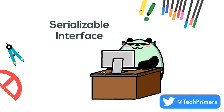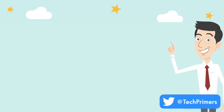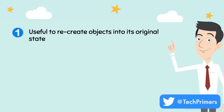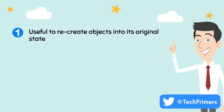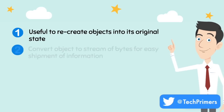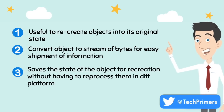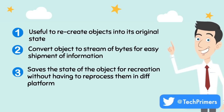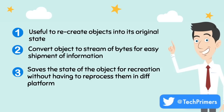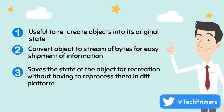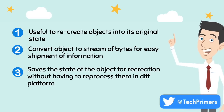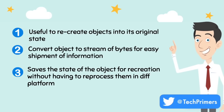To recap: serialization is useful for recreating objects into their original state, because you need to recreate these objects with their original value into the new JVM. Serialization converts objects to a stream of bytes which can be shipped over the network. Finally, these saved objects can be recreated without any reprocessing in a different platform — this could be Unix, Windows, or anything else.